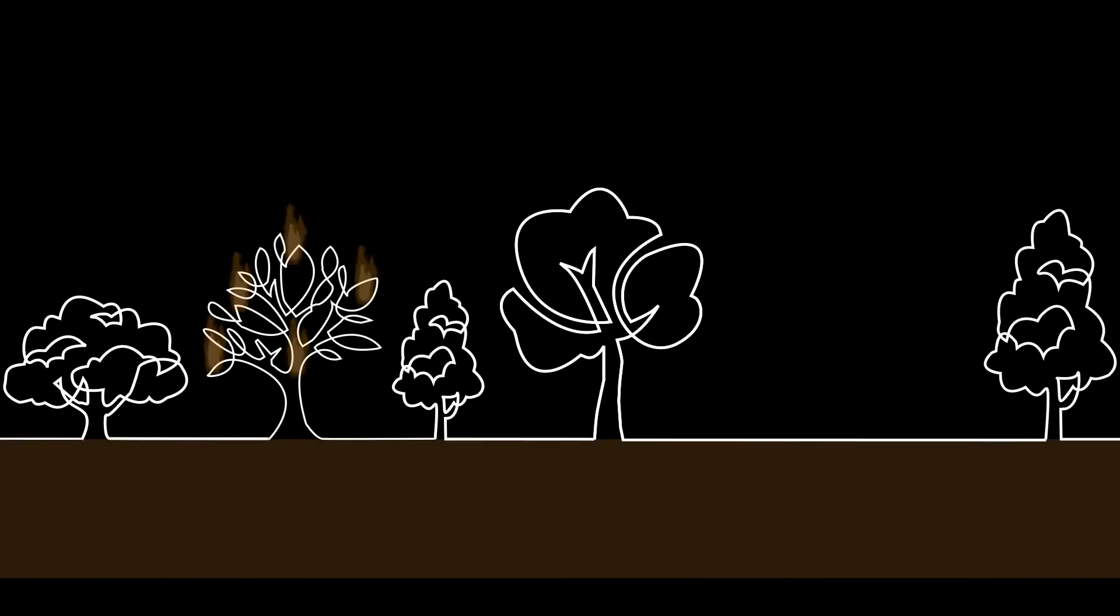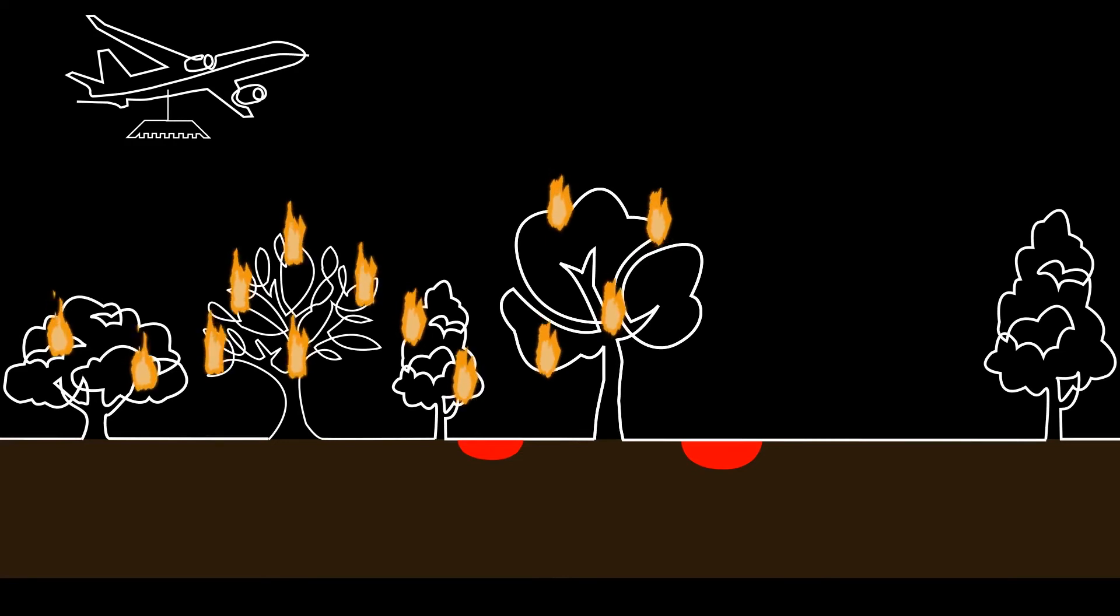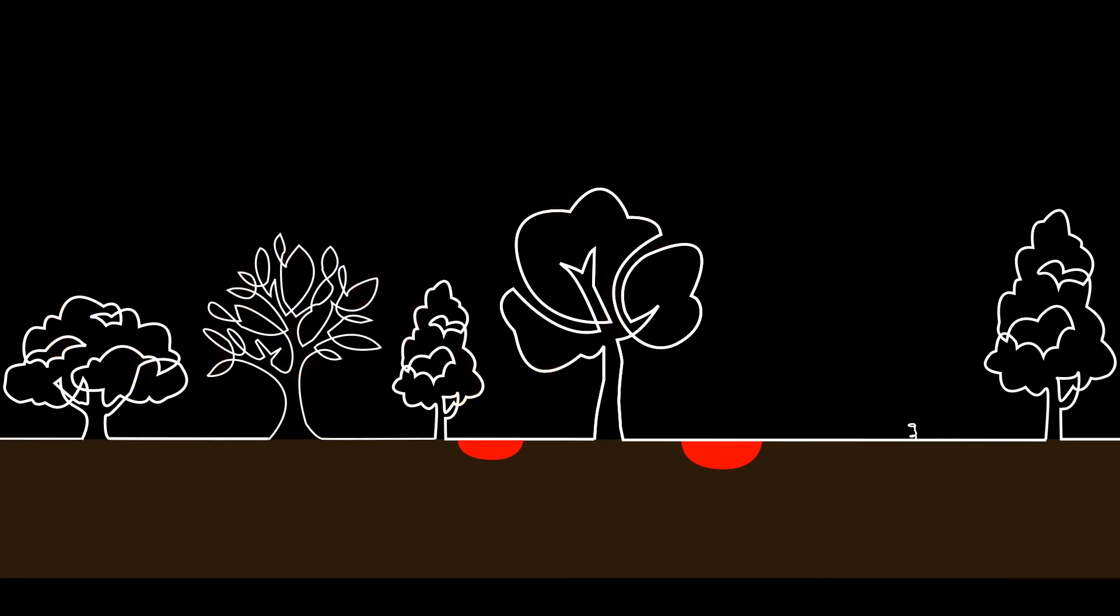With early detection and fire type information, the suppression can be performed immediately and the firefighting strategy can be more efficient. This way we can minimize the negative impact of peatland wildfires on people and on the environment.